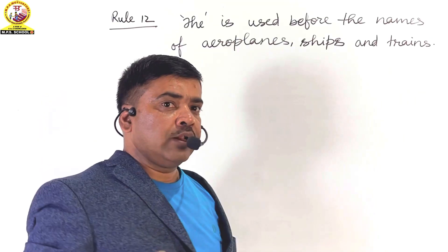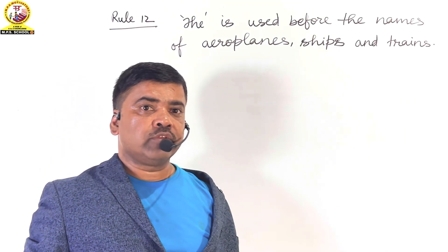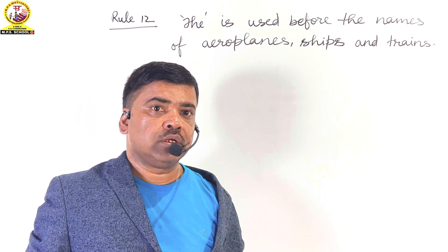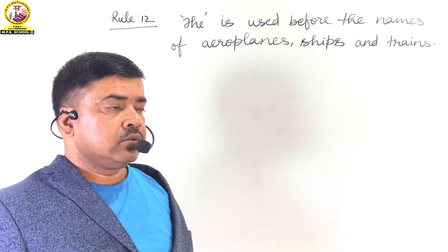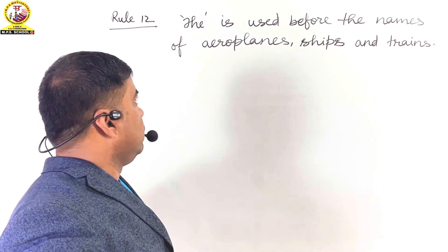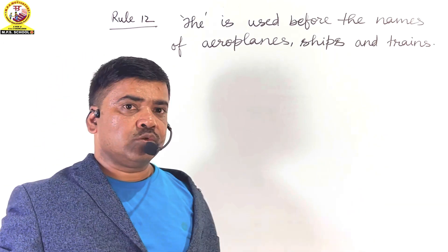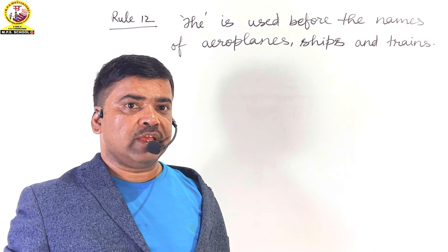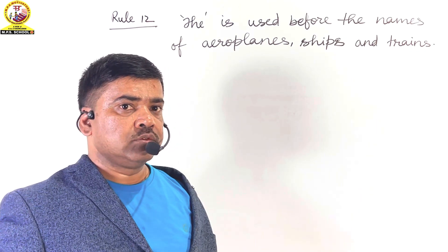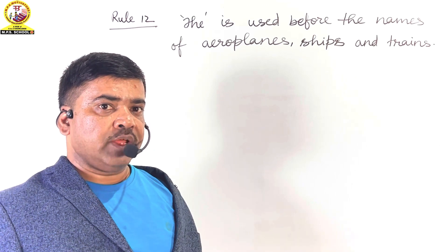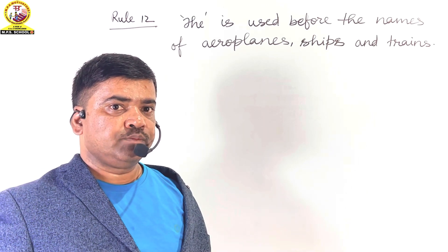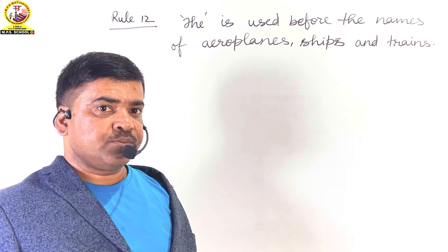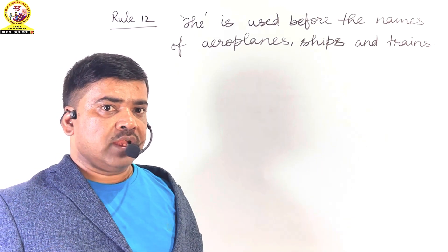In this session I am going to discuss with you the next rule, that is rule 12 of the use of 'the'. The 12th rule is: 'the' is used before the names of aeroplanes, ships, and trains.